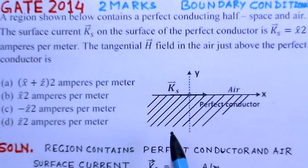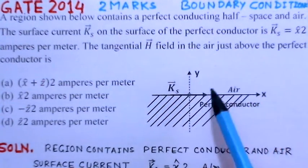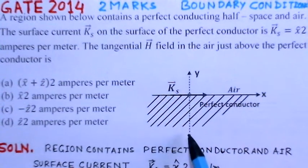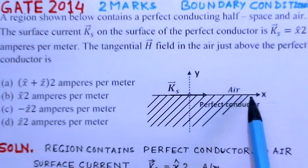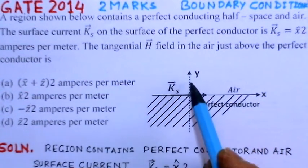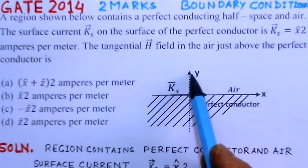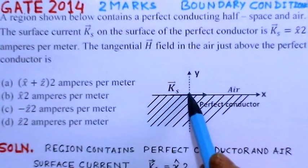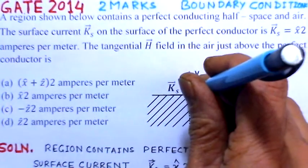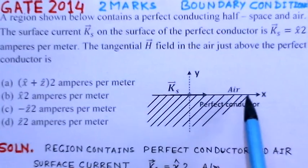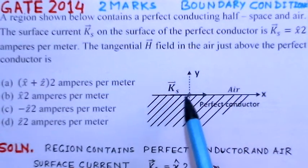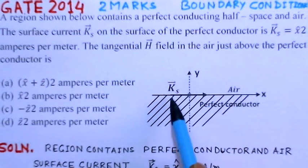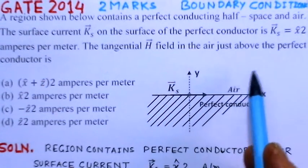This is a problem of boundary conditions having two media: one is a dielectric and the other is a perfect conductor. The surface current Ks is in the x-direction, y is the corresponding direction, and z is perpendicular to the plane of the paper. This forms a right-handed coordinate system. We have to find the value of the magnetic field for the surface current of 2 amperes per meter.